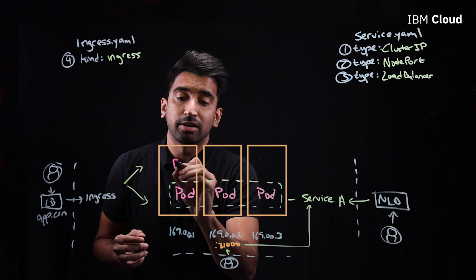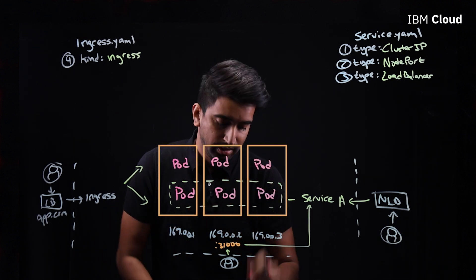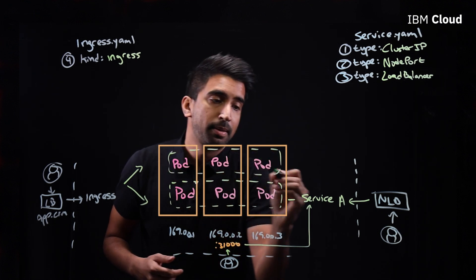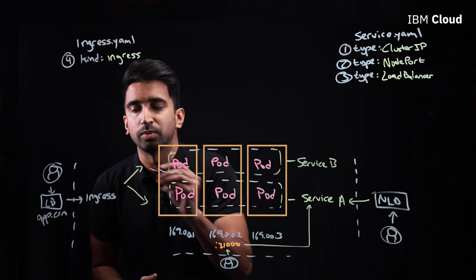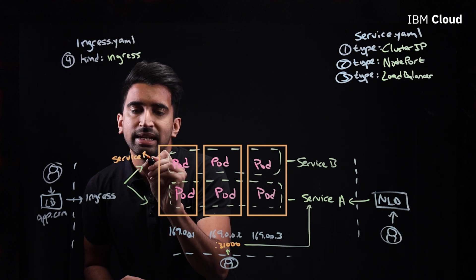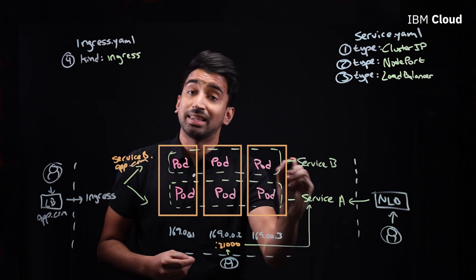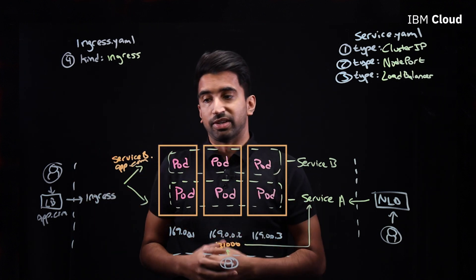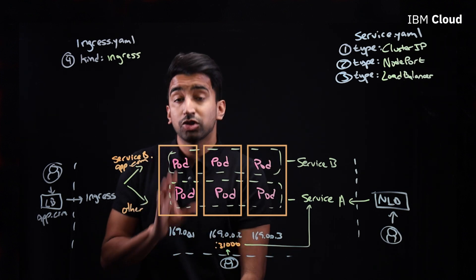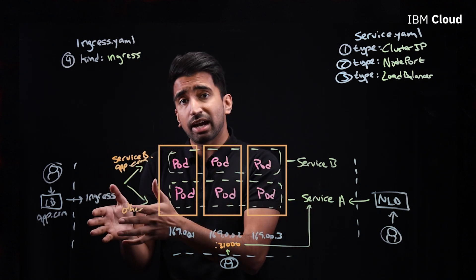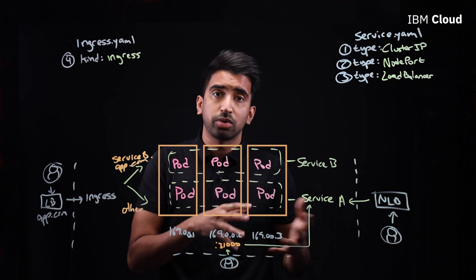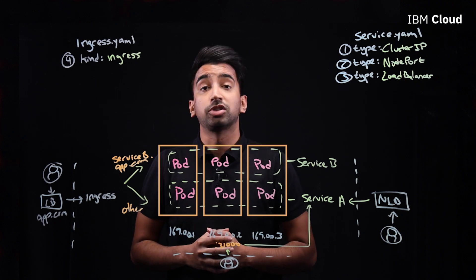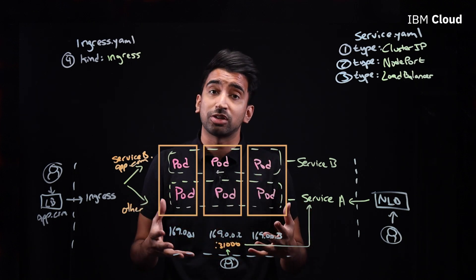Here's where the interesting part comes in: Ingress can route based on a set of rules. Let's say we have a second set of pods routing to Service B. We can introduce a rule that says if the request comes in with serviceB.app.com, then route to that set of services; otherwise route all other traffic to Service A. Ingress is powerful because you can route multiple back-end services with a single IP address using path-based routing. There are also other advantages like TLS termination, virtual hosts, and a number of other capabilities. This was Kubernetes Ingress in five minutes — if you enjoyed this video or have any questions, be sure to drop a like or comment below.